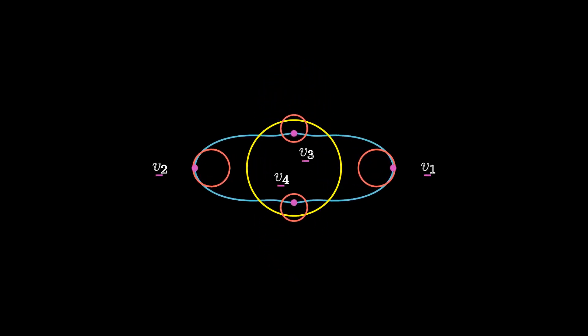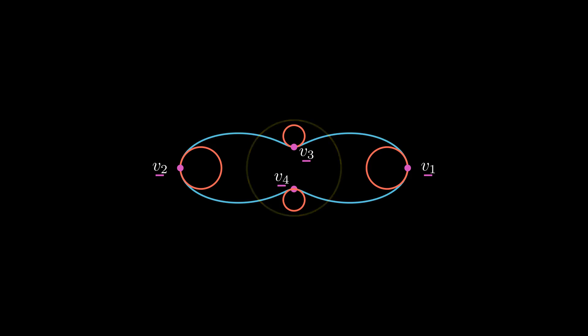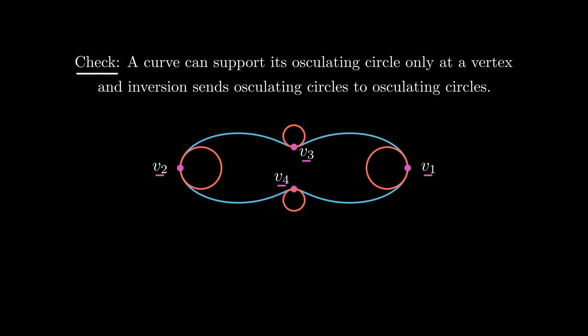The four-vertex theorem now will follow from the following two facts which I'll leave to you as exercises. If a curve locally supports its oscillating circle at a point, then that point is a vertex. And inversion sends oscillating circles to oscillating circles.